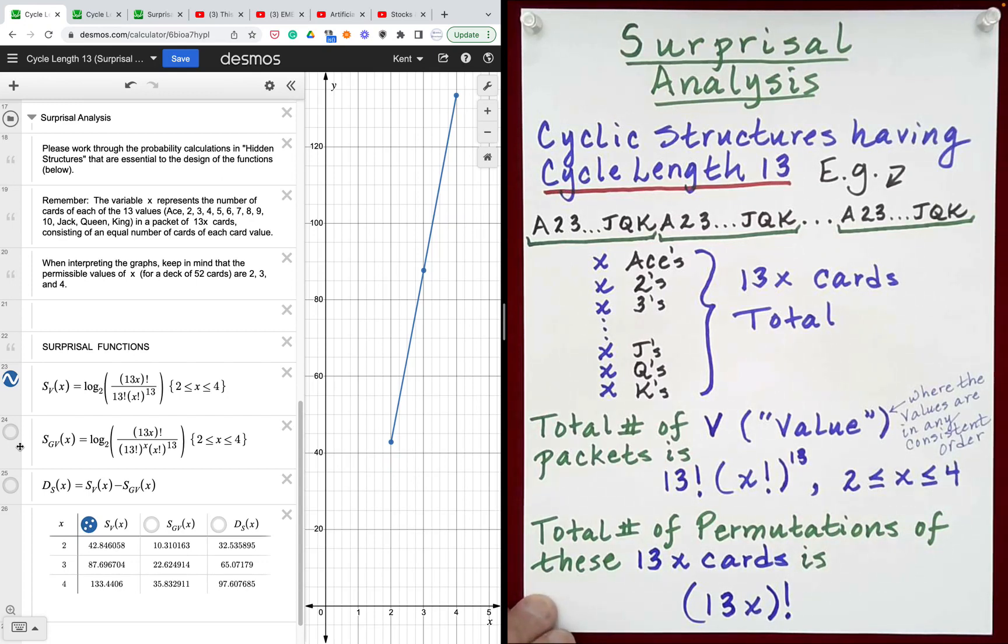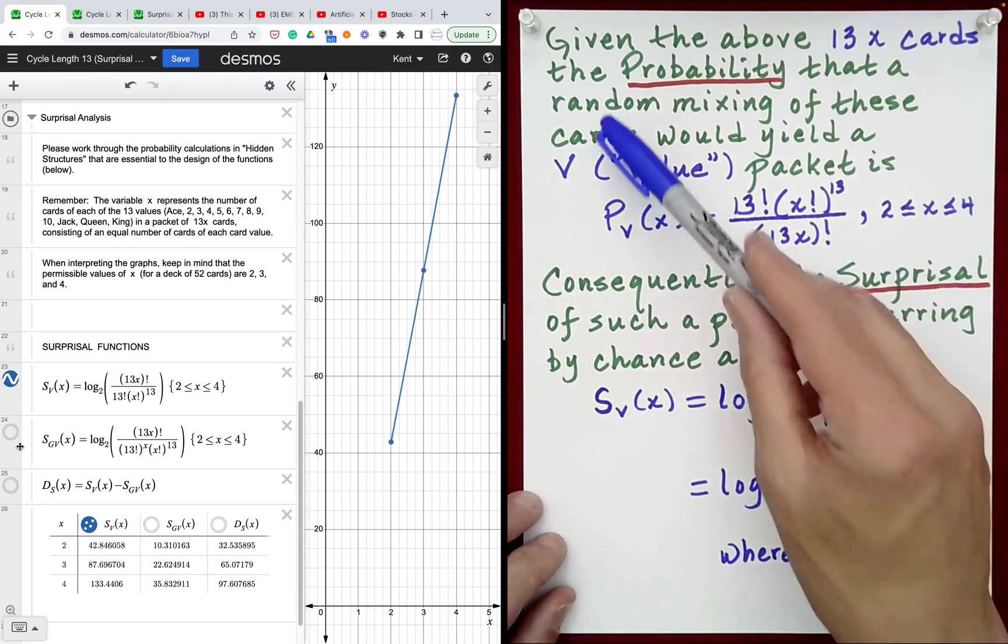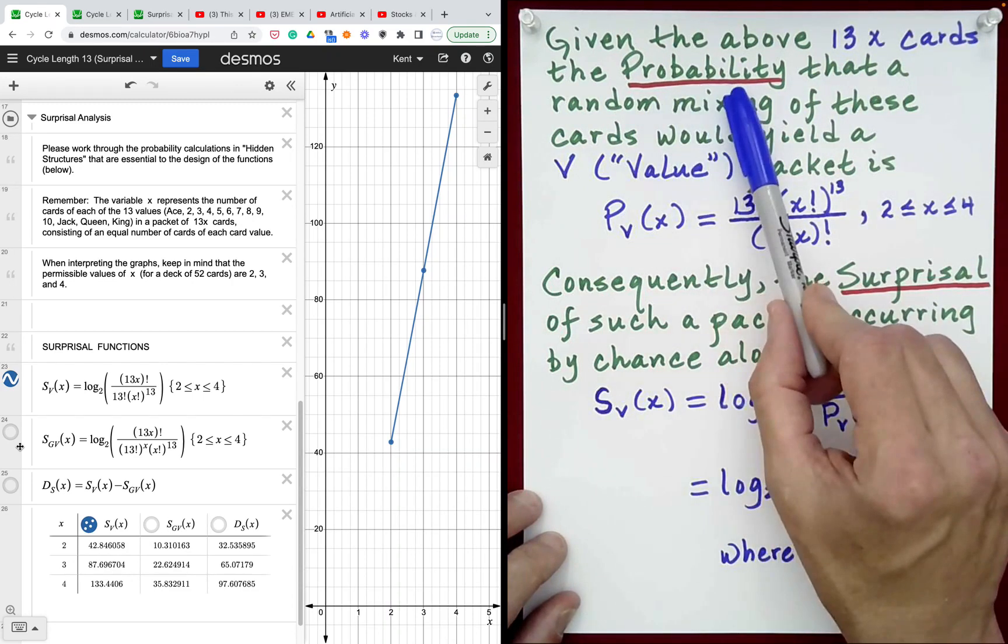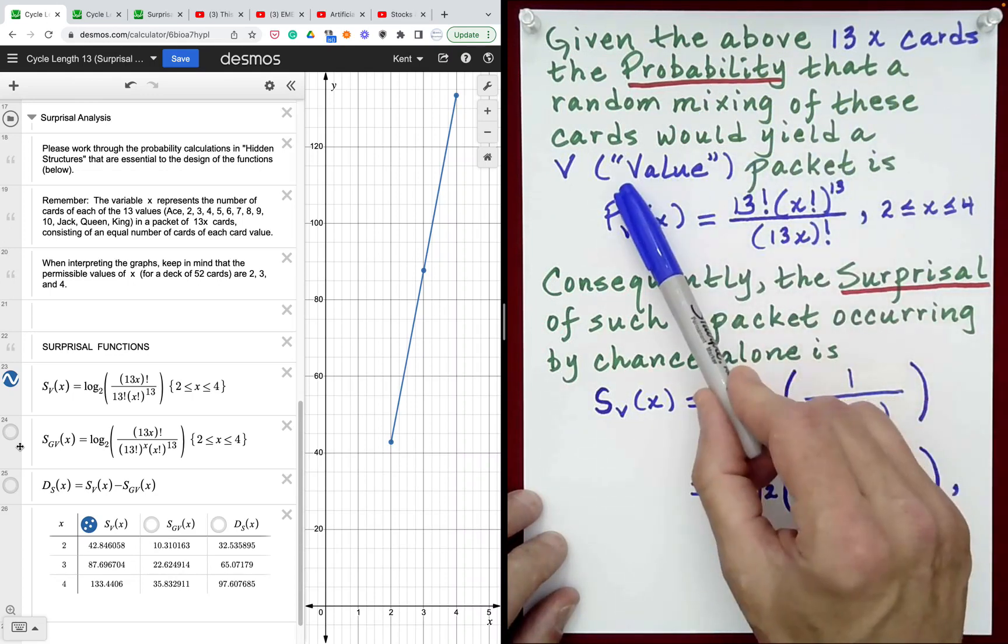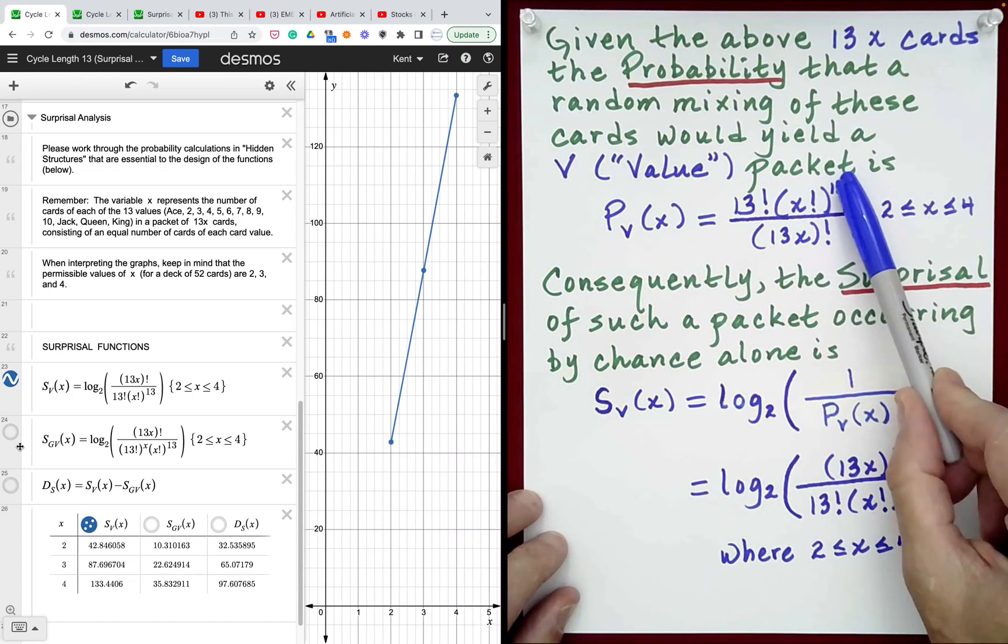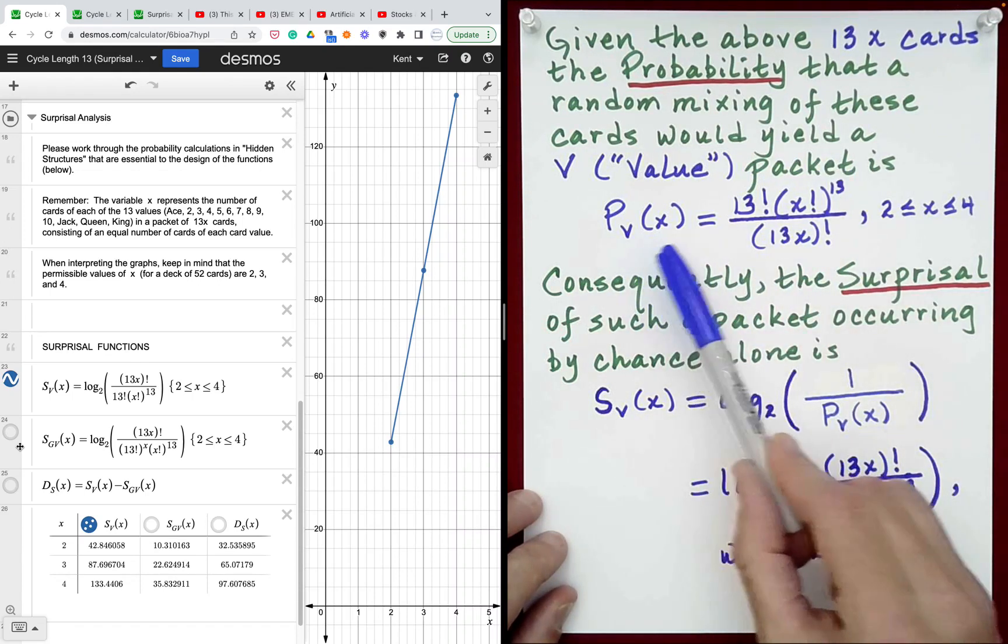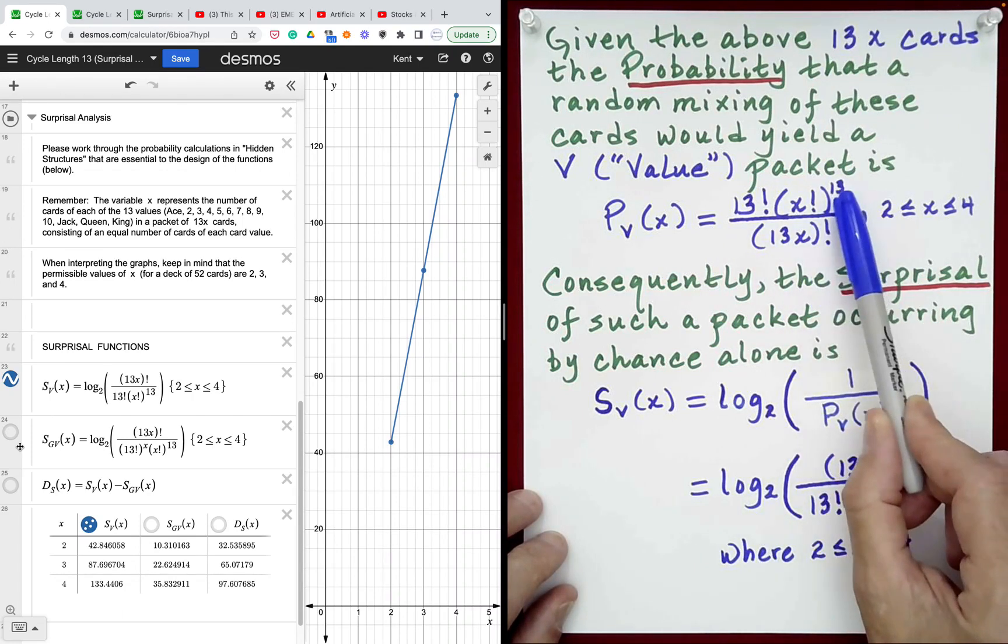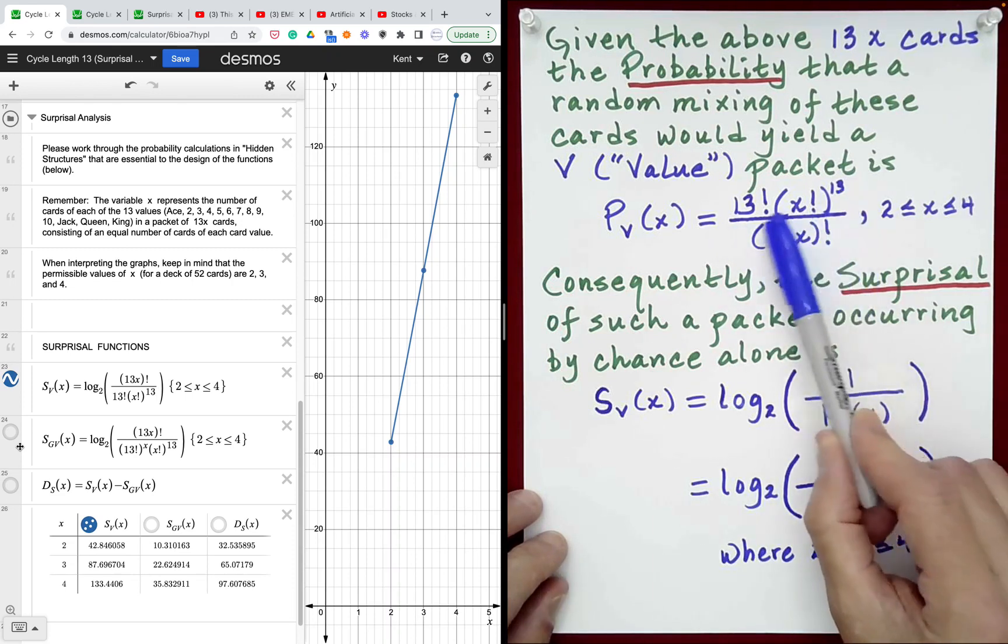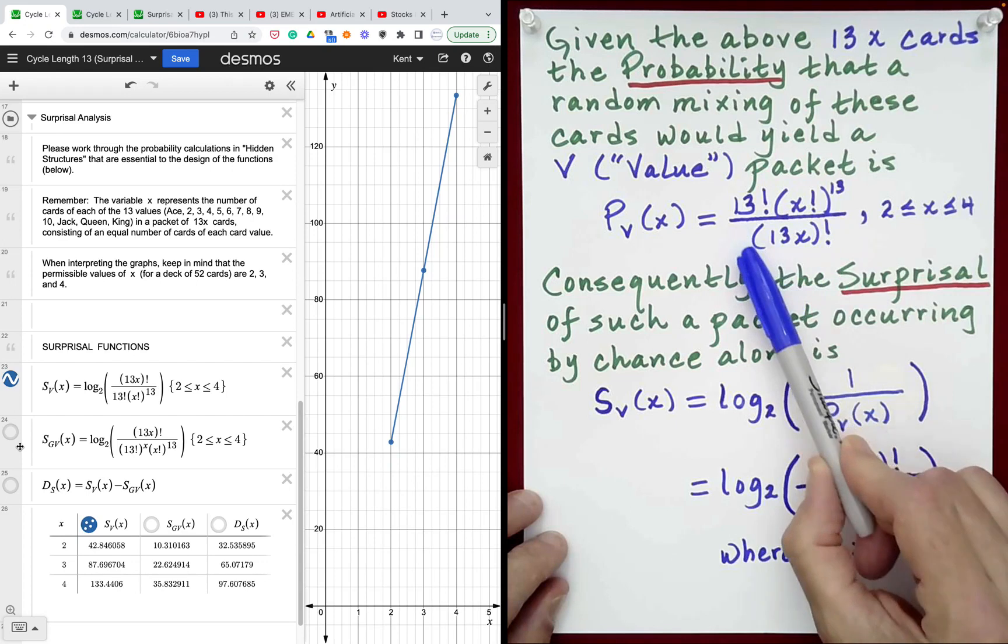To obtain the probability of achieving such a packet structure that cycles through the card values, we will need to divide these two quantities. Therefore, given the above 13x cards, the probability that a random mixing of these cards would yield a packet that cycles through the card values in some consistent ordering is 13 factorial multiplied by the quantity x factorial raised to the 13th divided by the total number of orderings of those 13x cards, which is the quantity 13x factorial.